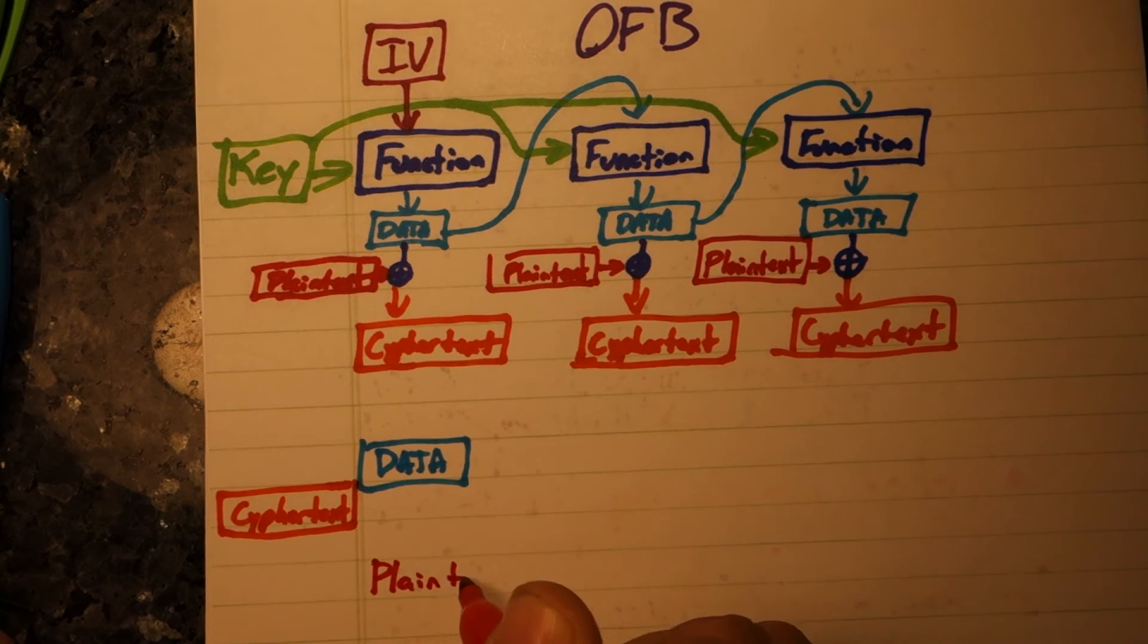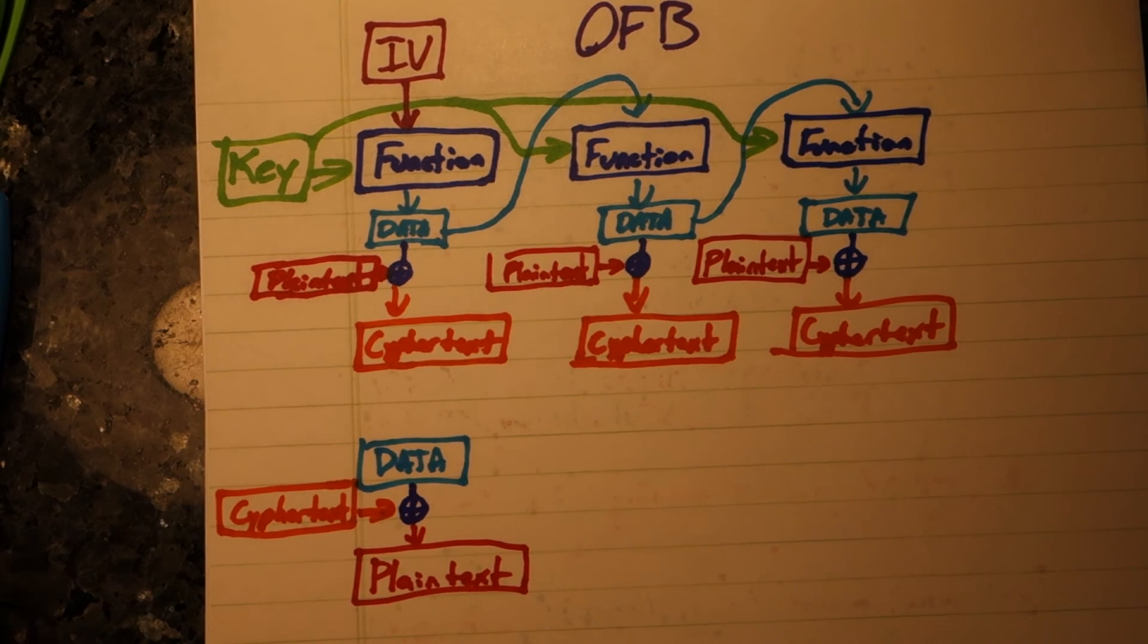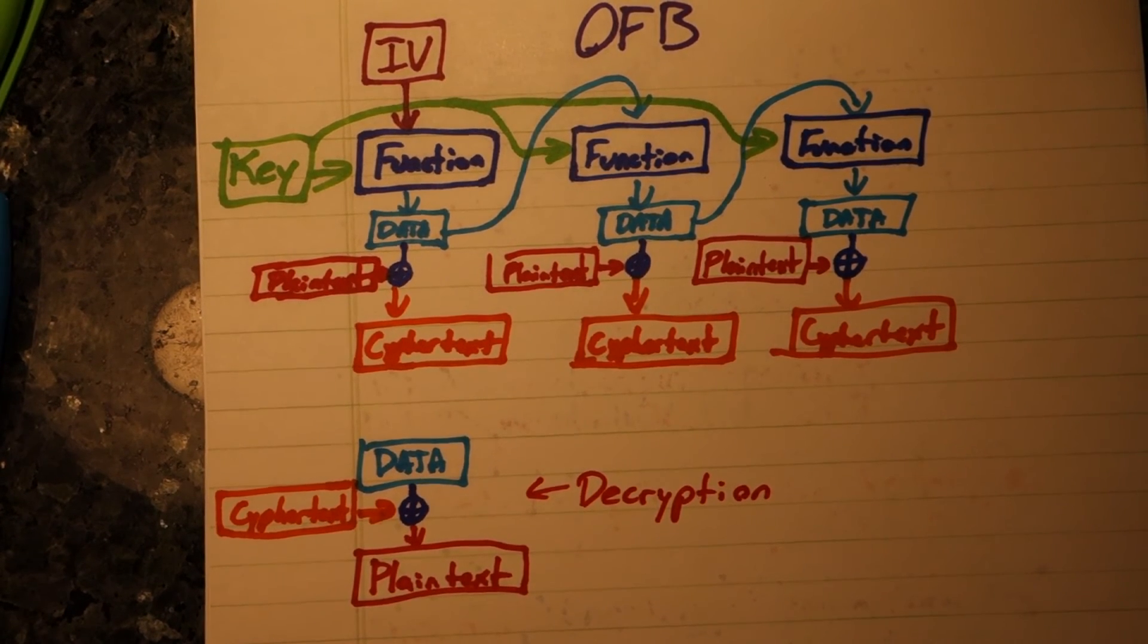And we've arrived at our first secure cipher mode. As long as the key is secret, and we don't reuse an initialization vector, this is secure.